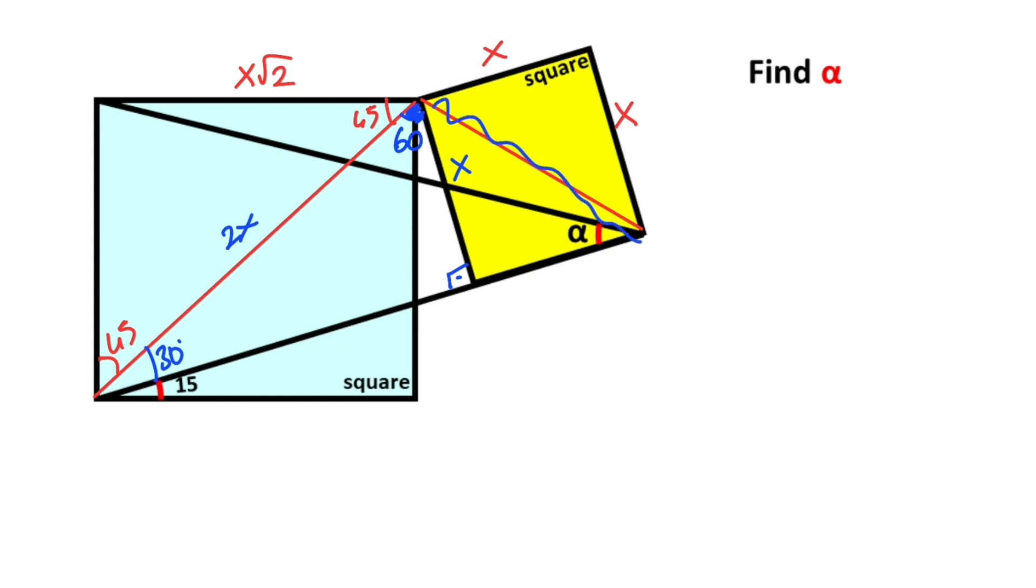So we know that this is diagonal. Therefore, these must be equal to 45 degrees. So if there's an X unit opposite of the 45 degrees, opposite of the 90 degrees here must be equal to X root 2.